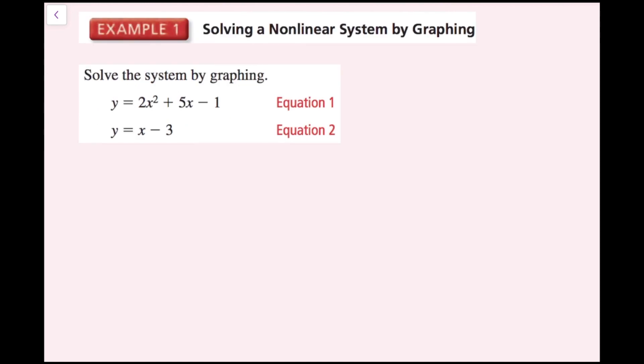For example one, we're going to solve the system by graphing. I have y equals 2x squared plus 5x minus 1 and y equals x minus 3. You could graph this by hand, but if you have access to a graphing calculator it's much easier. I'm going to plug these equations into Desmos.